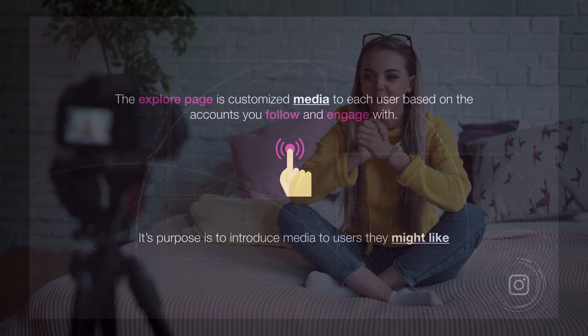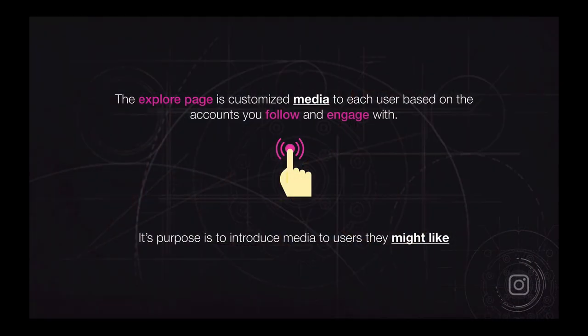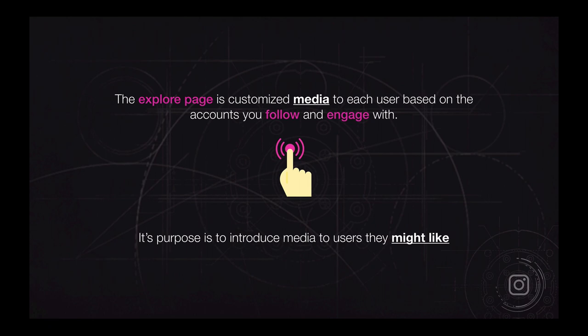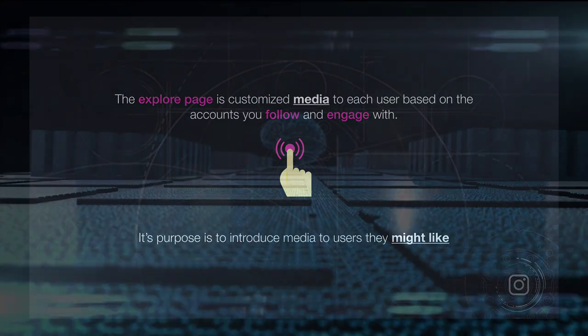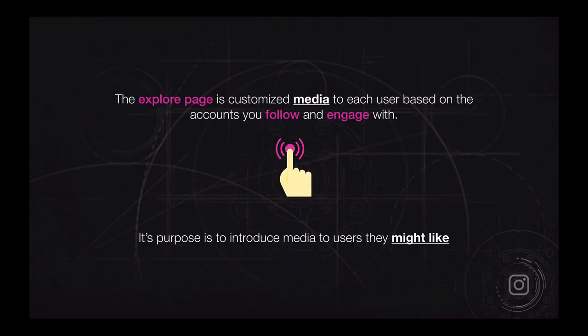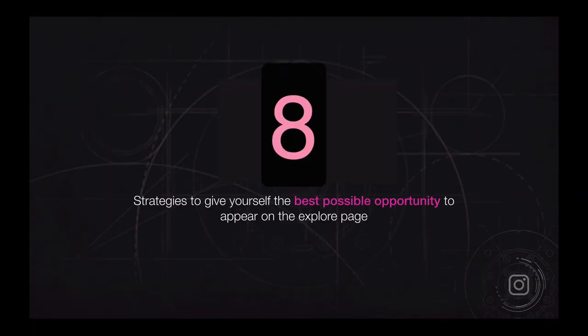Maybe that's a YouTube channel, maybe that's a blog that you have. We're now going to make sure we're also optimizing our media in order to hack the Instagram algorithm's Discover tab. Its purpose is to introduce media to users they might like. We want to make sure Instagram thinks that a lot of people who are relevant to our core business and to our niche are going to like our content. It will cover the eight strategies to get yourself the best possible opportunity to appear on the Discover and Explore pages on Instagram.